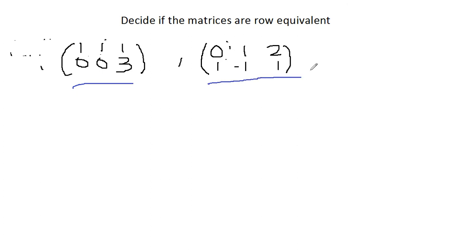So what does it mean by row equivalent? It means if both matrices have the same reduced row echelon form.